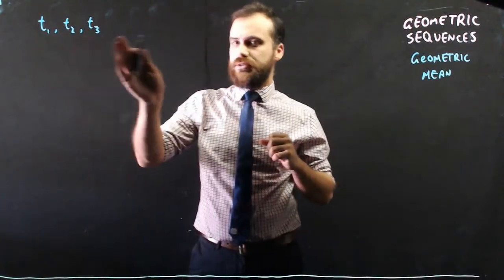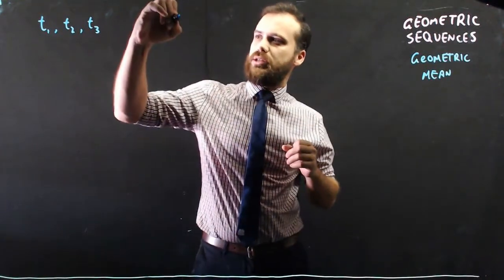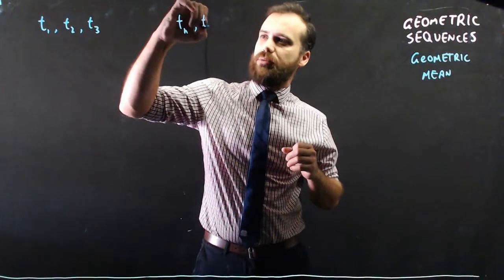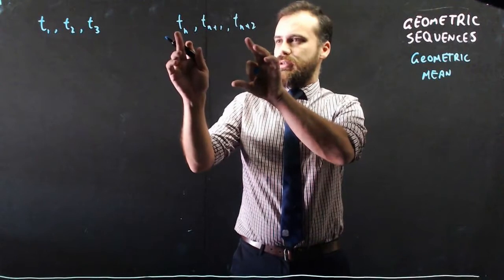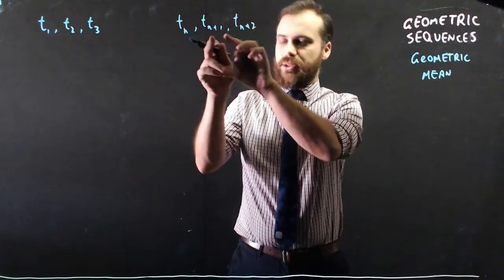It doesn't need to be the first terms. It could be any terms. It could be term n followed by term n plus 1 followed by term n plus 2. The geometric mean is term n plus 1, the middle one.